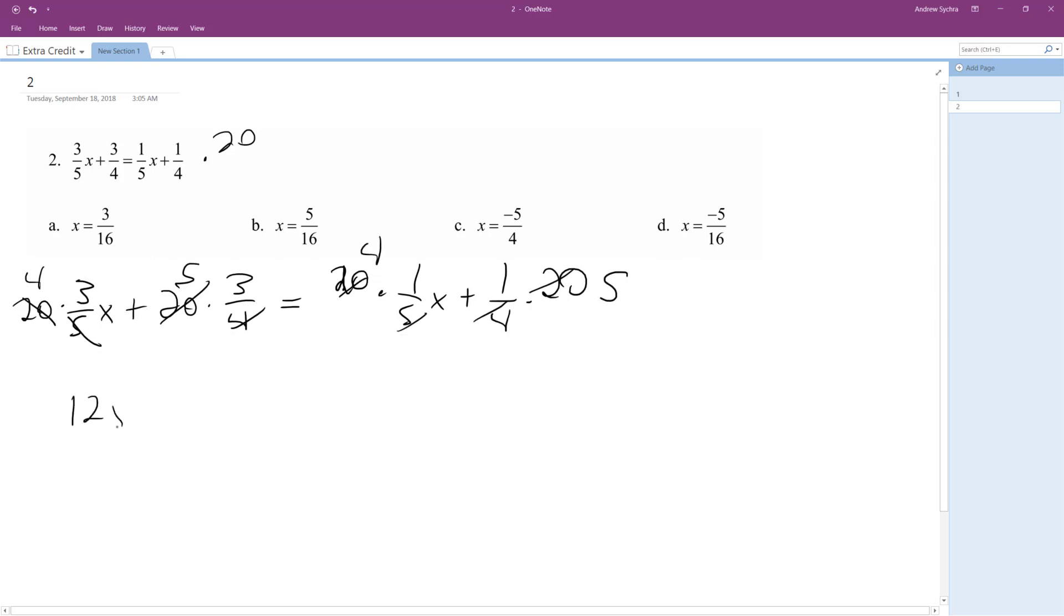So we get 12x because 4 times 3x. 12x plus 15 is equal to 4x plus 5. So combine like terms. I get 8x is equal to negative 10 divided by 8 divided by 8. x is equal to negative 5 over 4.